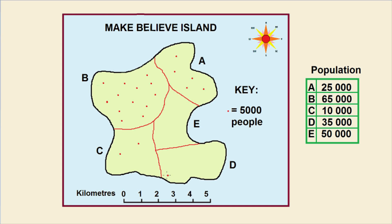Region D has 35,000 people which will be 7 dots: 1, 2, 3, 4, 5, 6, 7. And finally region E, which is 50,000 people, which will be 10 dots: 1, 2, 3, 4, 5, 6, 7, 8, 9, 10.